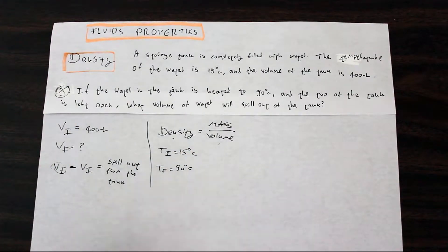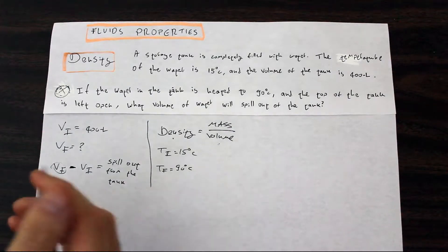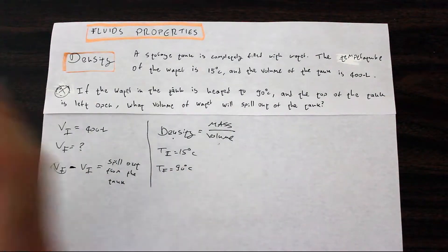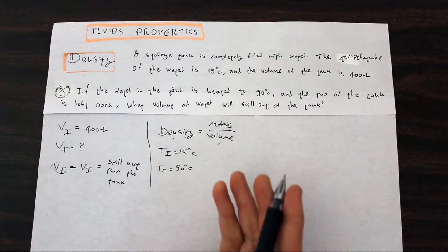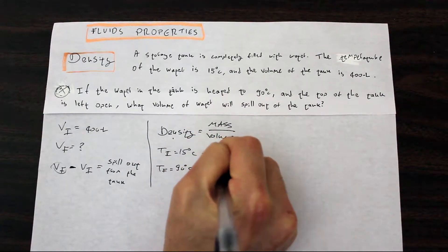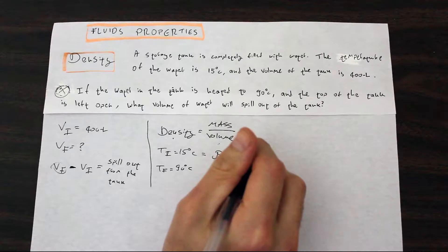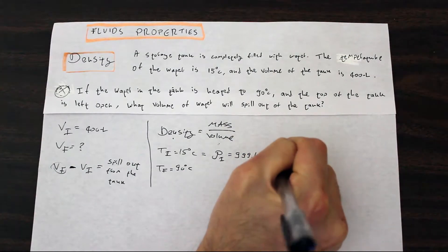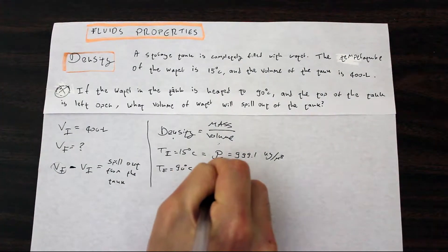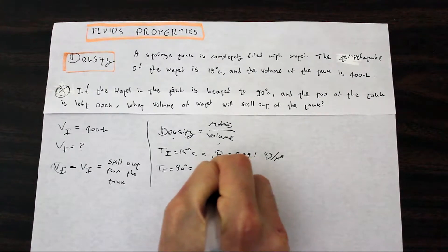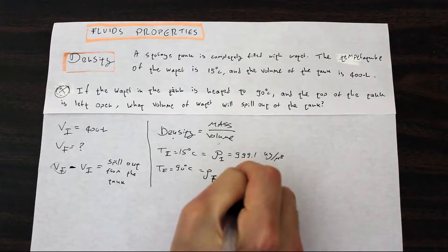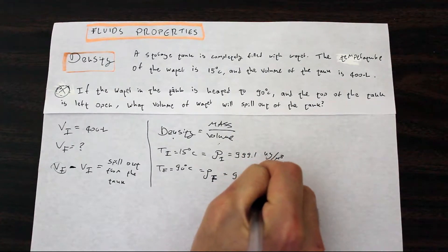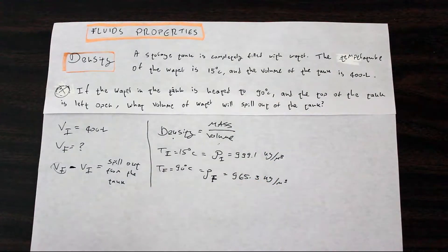Now using Google, or simply go to the end or the beginning of your book, you will usually find a table of conversions for specific densities of water under certain temperatures. So, I just went to Google and found that the density of water at 15 degrees Celsius is 999.1 kilograms per meter cubed, and the density, I'll call this F, the final density at 90 degrees is 965.3 kilograms per meter cubed.